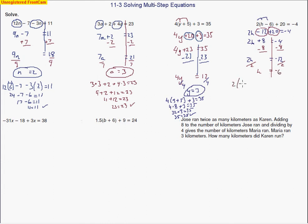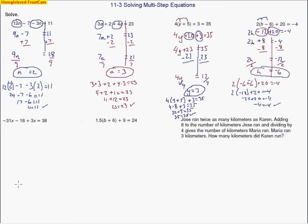Let's check and make sure it's right: 2 times negative 6, take away 6, plus 20 should equal negative 4. So I do the work: the same signs mean I end up adding, and plus 20 equals negative 4. This makes negative 24 plus 20, and sure enough those two numbers do equal negative 4. So it checks out — we know we have the right answer.